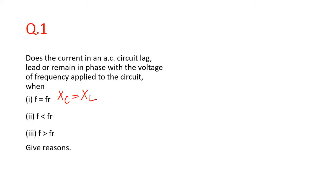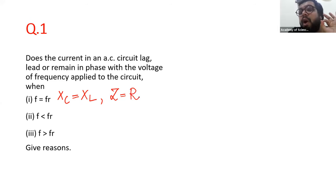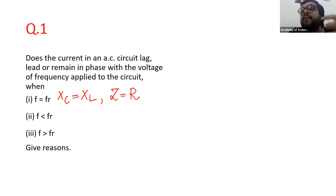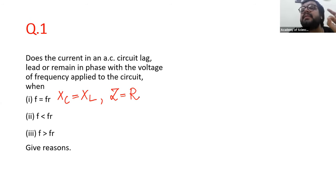That is what we learned in the last class. At resonance, XC and XL become equal to each other. As a consequence, the impedance becomes equal to R — meaning the only opposition existing in the circuit is resistance. That is why, when a series LCR AC circuit is at resonance, it is categorically stated as a purely resistive circuit.